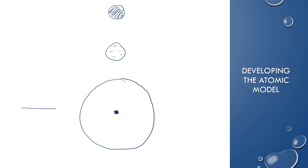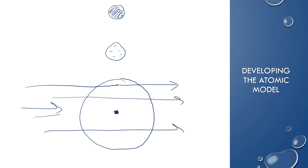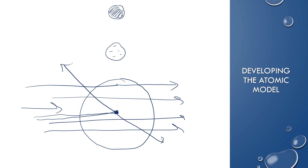Then Rutherford did something called the Gold Foil Experiment. What he did was he shot alpha particles, which are basically helium nuclei, toward the atom. This is called the gold foil experiment because he used a very thin sheet of gold atoms. When the alpha particles went through the foil, most of them went straight through, and occasionally one would hit the nucleus and bounce back, or be deflected if it just kind of bumped. But that didn't happen very often — most of them went straight through.